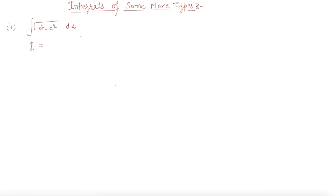The integral given to us is... can I write this function as 1 into this x square minus a square under the root? Now I will give this function as first function and this as second function.